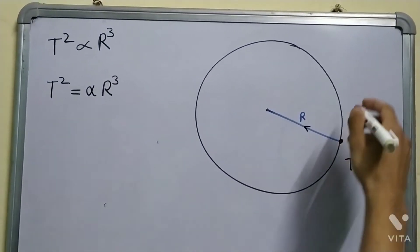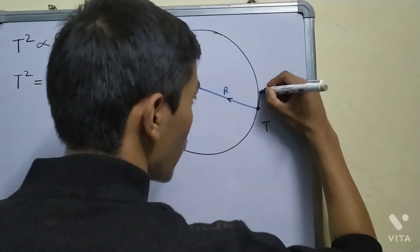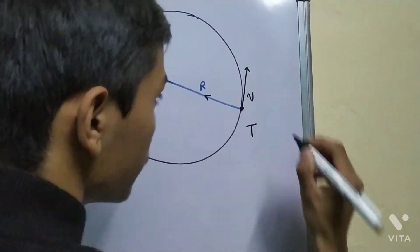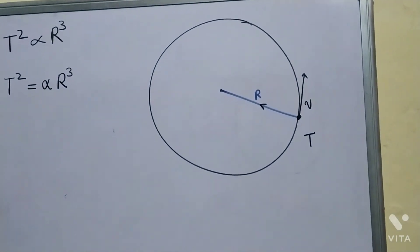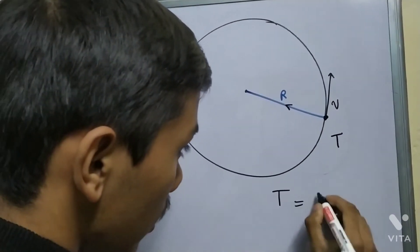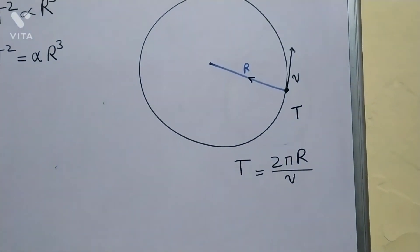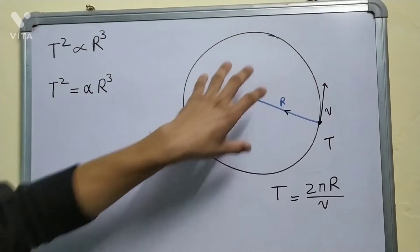Now, if the planet is revolving around the star, it has a velocity v, let us say. Then the time period will be 2πr divided by v—total distance upon speed.